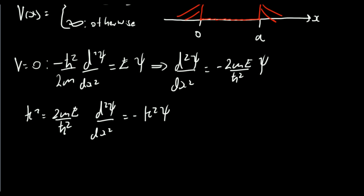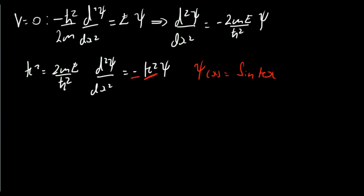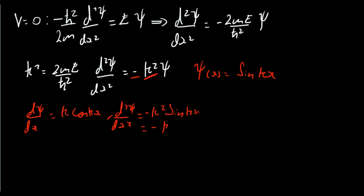This is a very famous form of equation in physics, recognisable from classical mechanics. We're going to guess solutions, which is a perfectly valid method. When we differentiate twice, we need to get out a factor of minus k squared. A suitable function is psi of x equals sine of kx. Differentiating: d psi by dx equals k cos kx, and d2 psi by dx squared equals minus k squared sine kx, which is just minus k squared times psi. So sine of kx definitely satisfies the differential equation.